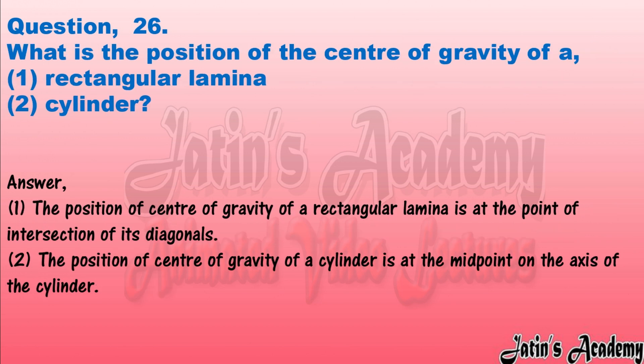Question twenty-six: what is the position of the center of gravity of a (1) rectangular lamina and (2) cylinder? Answer: (1) the center of gravity of a rectangular lamina is at the point of intersection of its diagonals. (2) The center of gravity of a cylinder is at the midpoint on the axis of the cylinder.